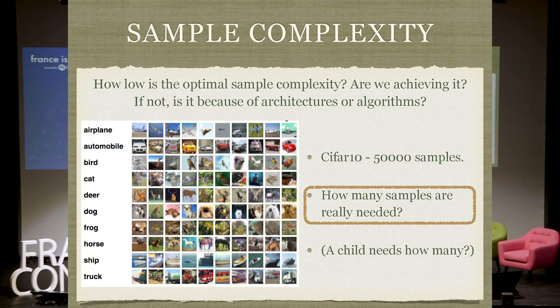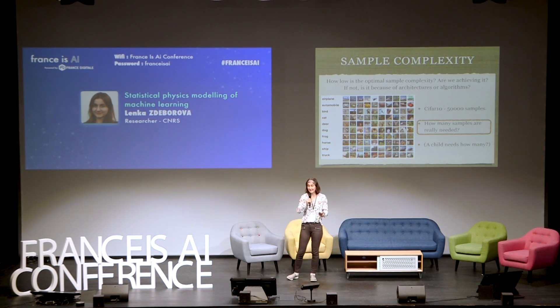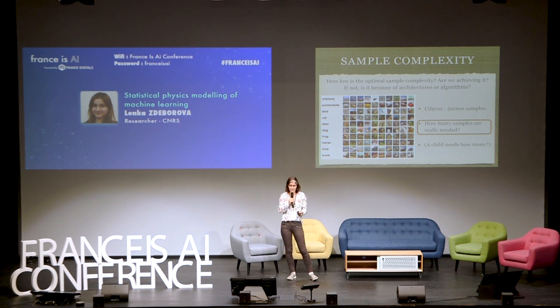If those are maybe a bit more abstract questions to practitioners, this one is really close to any practitioner: what is the sample complexity really? It has been mentioned today already at least twice that in medical applications, for instance, we don't have as many samples as we have in, say, CIFAR, where you learn to distinguish images based on 50,000 samples. But also as Yoshua Bengio was mentioning, intuitively a child doesn't need 50,000 pictures of cats and dogs to learn to distinguish them. So what is really the number of samples needed?